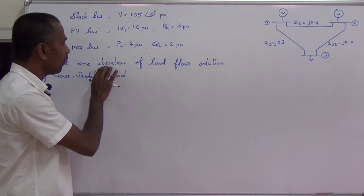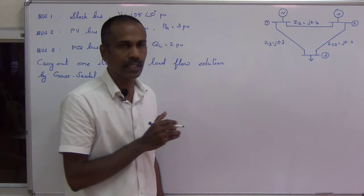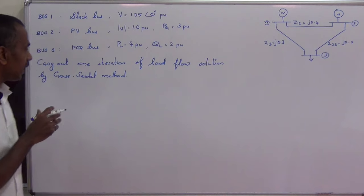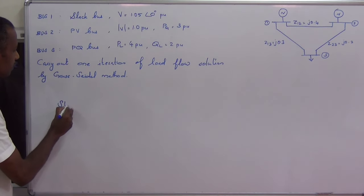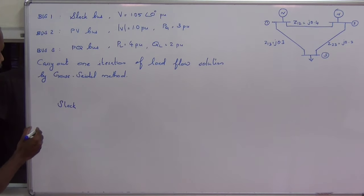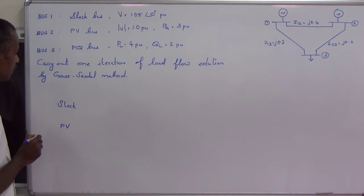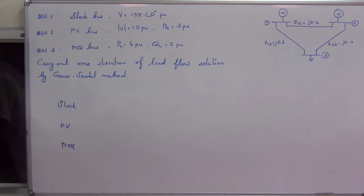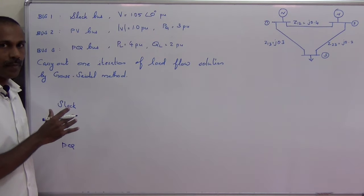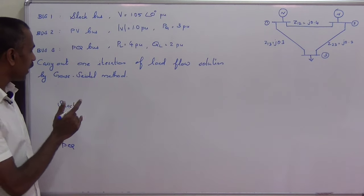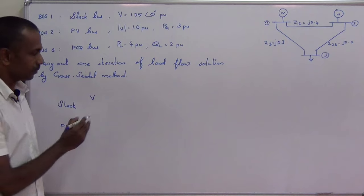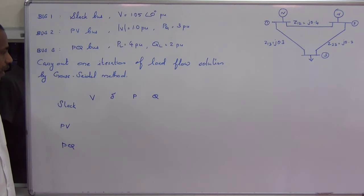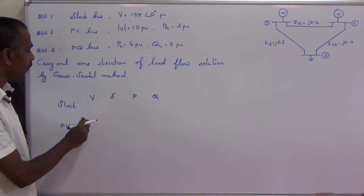In this problem, we have to do only one iteration. At the end of the first iteration, we need to find out the three bus voltages V1, V2, and V3. In the power system, we have three types of buses: the first one is the slack bus or reference bus, the second one is the PV bus or generator bus, and the third one is the PQ bus or load bus. There are mainly four parameters in load flow analysis: magnitude of bus voltage, angle of bus voltage, active power, and reactive power.